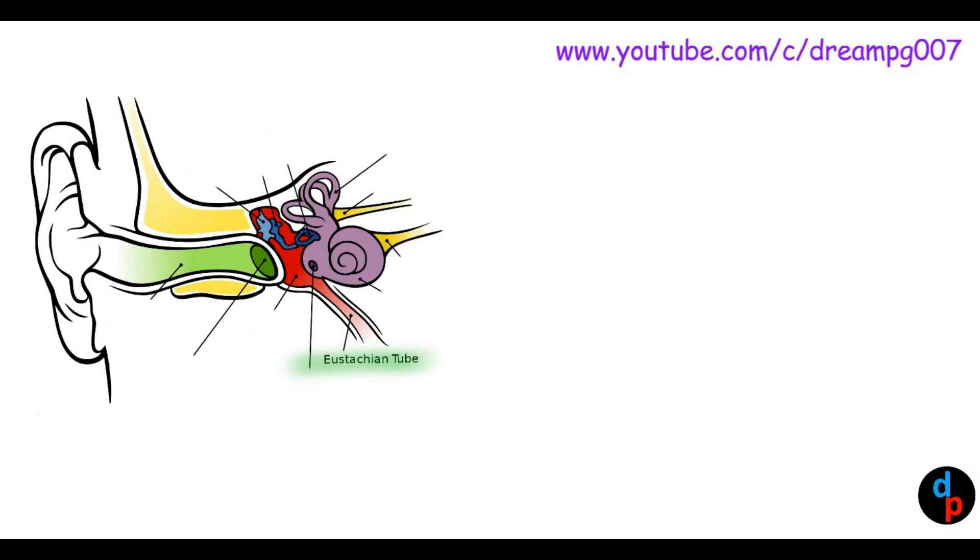Eustachian tube is about 36 mm long. As we all know, Eustachian tube has a bony part as well as a cartilaginous part. The bony part is situated posterolaterally, whereas cartilaginous part is situated anteromedially. One third of the total Eustachian tube is formed by the bony part, i.e. about 12 mm. Rest of the two-thirds, i.e. 24 mm, is formed by the cartilaginous part.